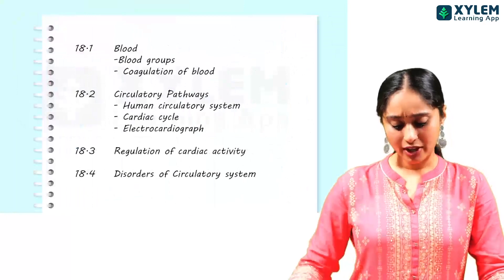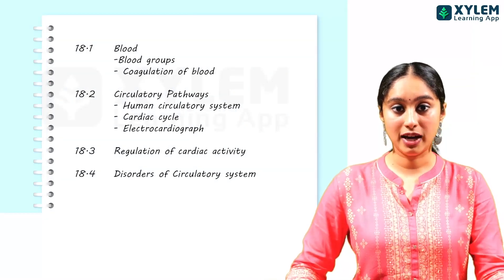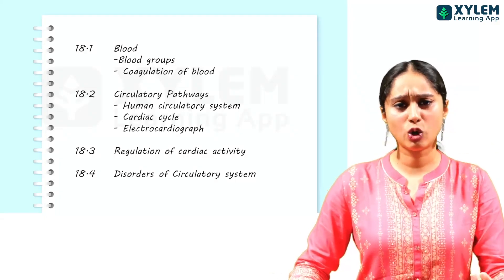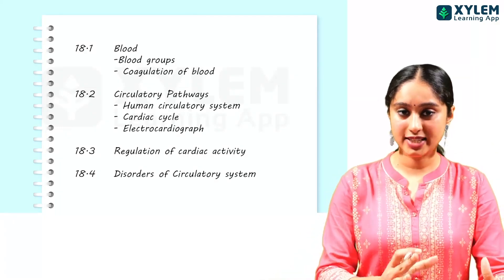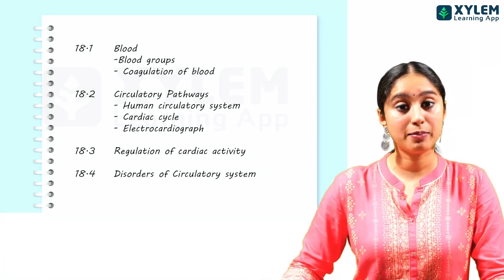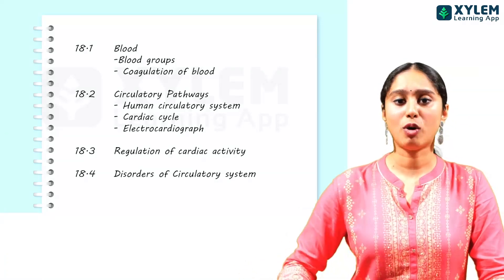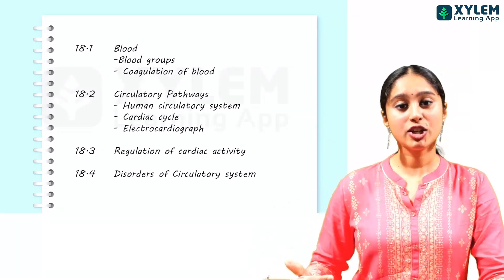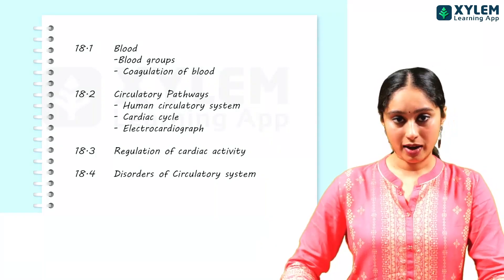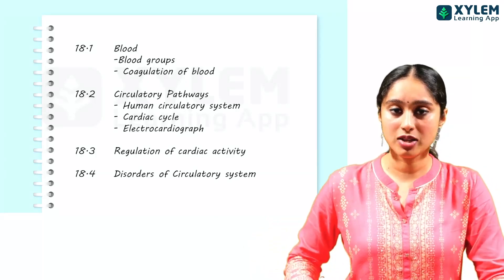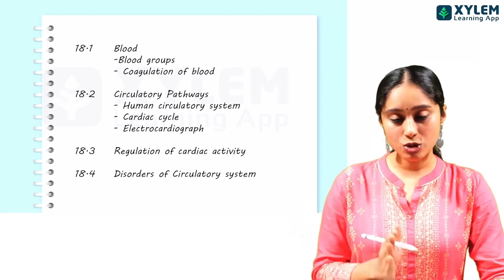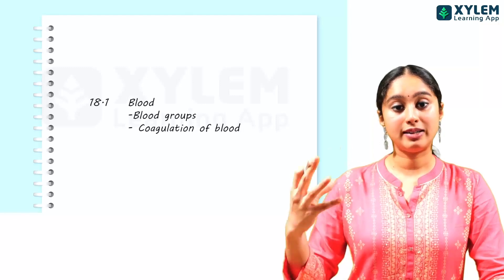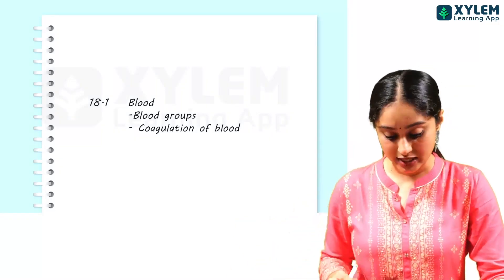In this chapter, we divide it into 4 sections. First, blood — how are the components, how is blood coagulation, groups of blood. The second section is circulation. The third section is regulation, and the fourth section is disorders. Now the first section covers blood groups, blood types, blood components, and associated questions.